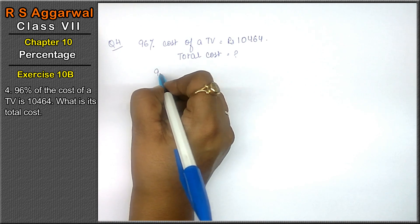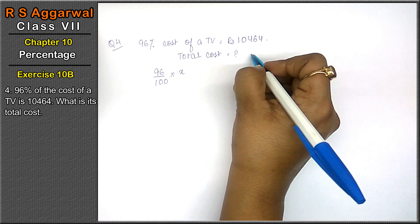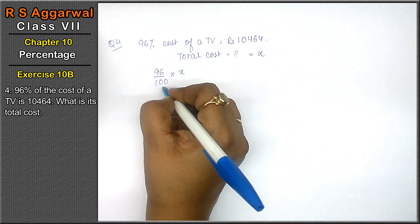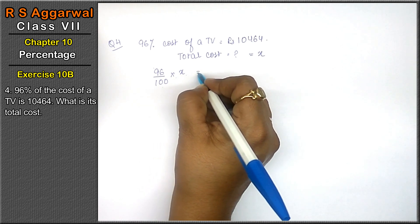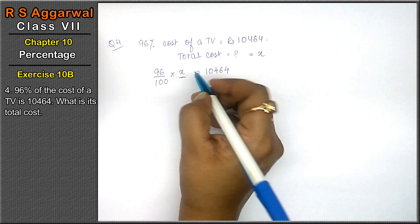Friends, 96% of total cost. Let total cost be X. 96% of the total cost, how much is our total cost? 10,464.